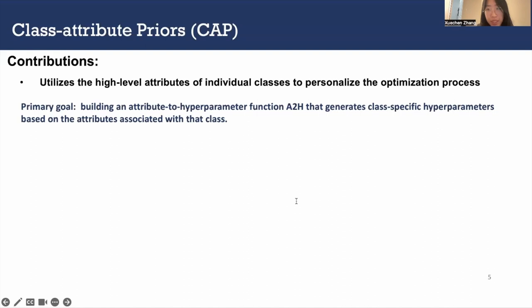What attribute will we use and how we use them? We extract high-level attributes from classes and use attributes to generate class-specific optimization strategies. The strategies correspond to hyperparameters. Our primary goal with CAP is building an attribute to hyperparameter function A2H that generates class-specific CAP parameters based on the attributes associated with that class.